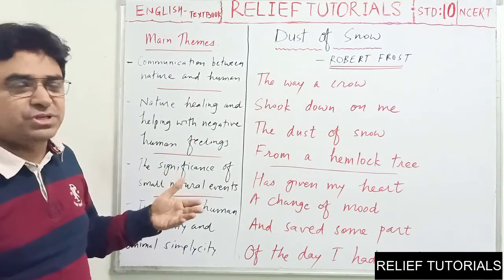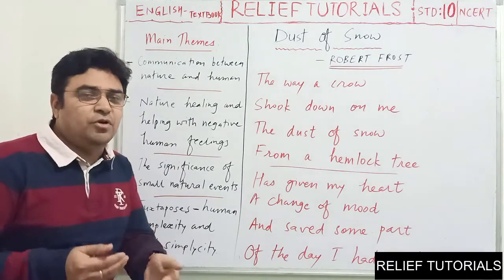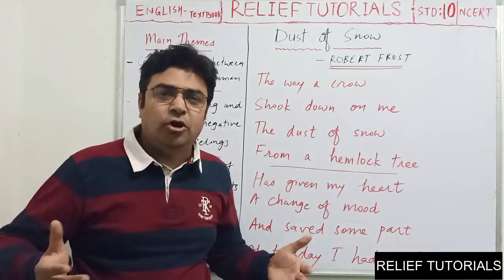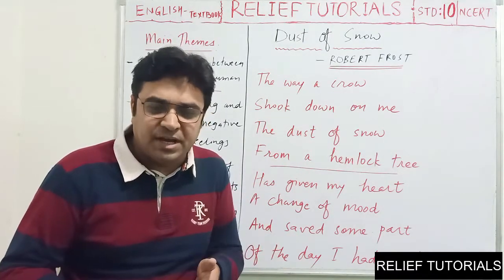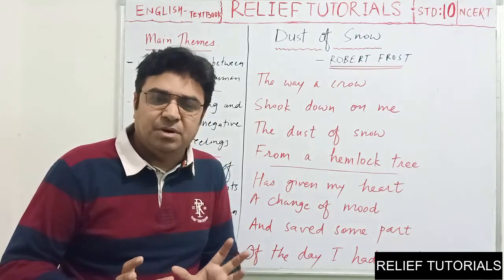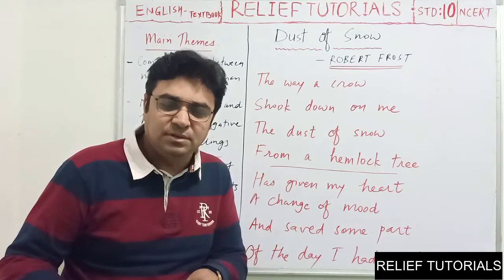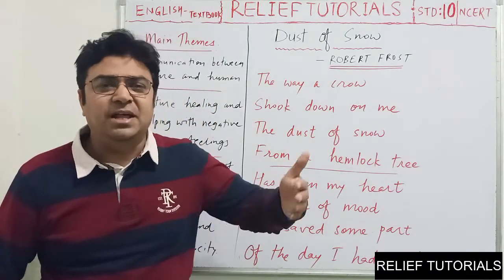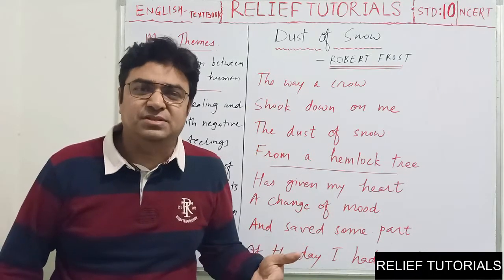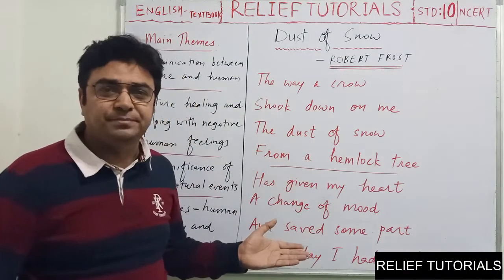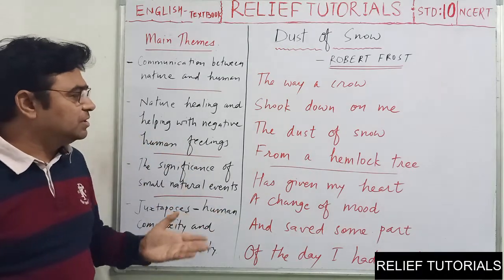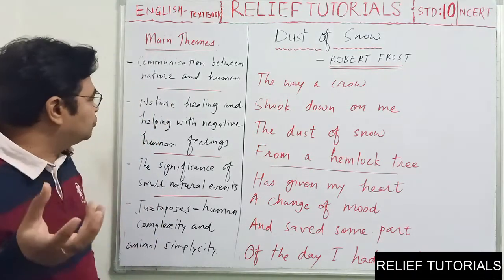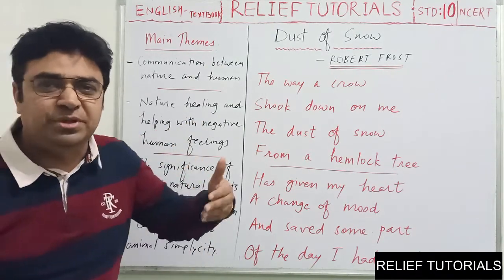So one thing I come across: it is a communication between nature and human. In our day-to-day chores, making things done throughout the day, we forget about nature. A lot of things happen around us — though in urban areas nature is very scarce, it is still there: some trees, the sky is open, some change of light throughout the day. Many happenings from nature are around us but we hardly give any attention to them. The poet has given us the chance to communicate with nature through this poetry. The slight falling of the dust of snow brings a change of mood and the rest of the day is totally saved — showing that nature is healing and helping with negative human feelings.